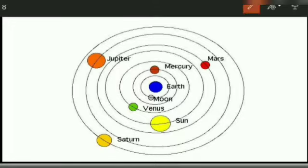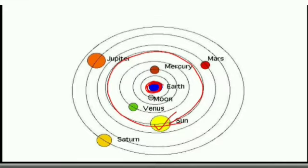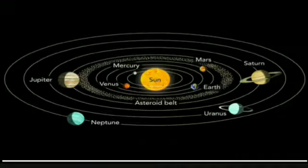Earlier, people believed that the earth was at the center and the sun went around the earth. But this is not so. The sun is at the center and our earth moves around it.